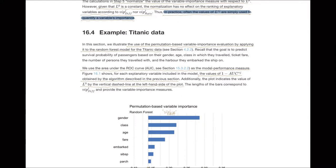Now let's move to the next section and apply these approaches to an actual example. Using the Titanic data we're already familiar with, we can calculate the ROC curve — the area under the ROC curve, the AUC. That value for the loss function is going to be calculated as one minus the AUC, because one is the perfect prediction power. So one minus the AUC area is going to be our performance value — our loss function.